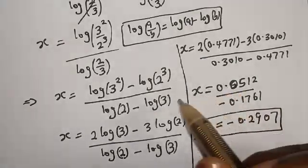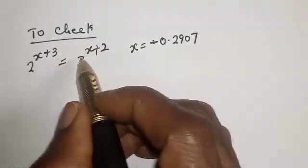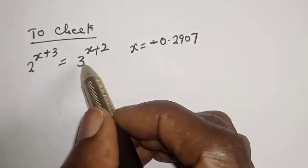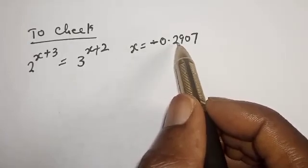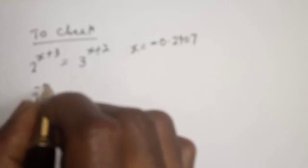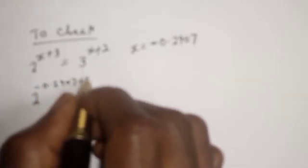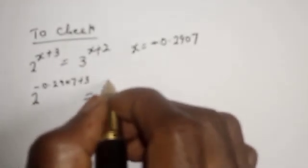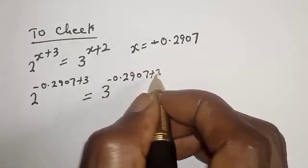Let's check to confirm if our answer is right. We have the given equation 2 raised to power x plus 3 is equal to 3 raised to power x plus 2. Where s equals negative 0.2907, this becomes 2 raised to power negative 0.2907 plus 3, equal to 3 raised to power negative 0.2907 plus 2.